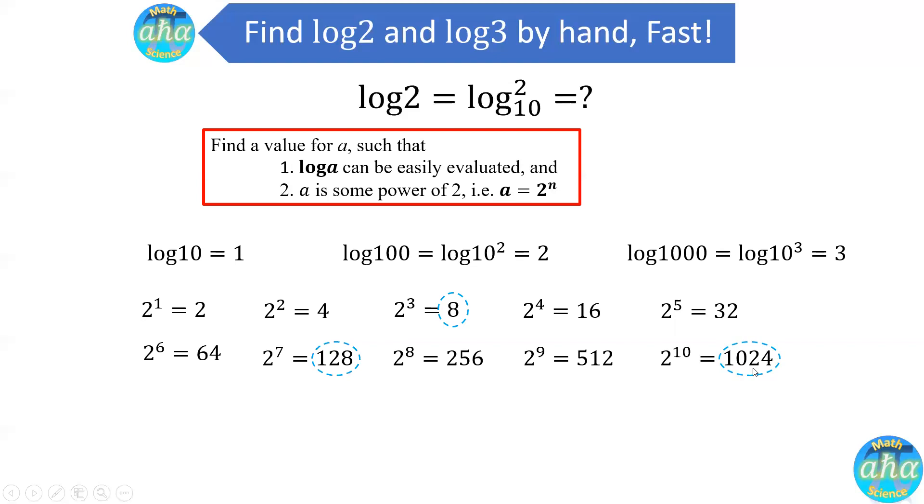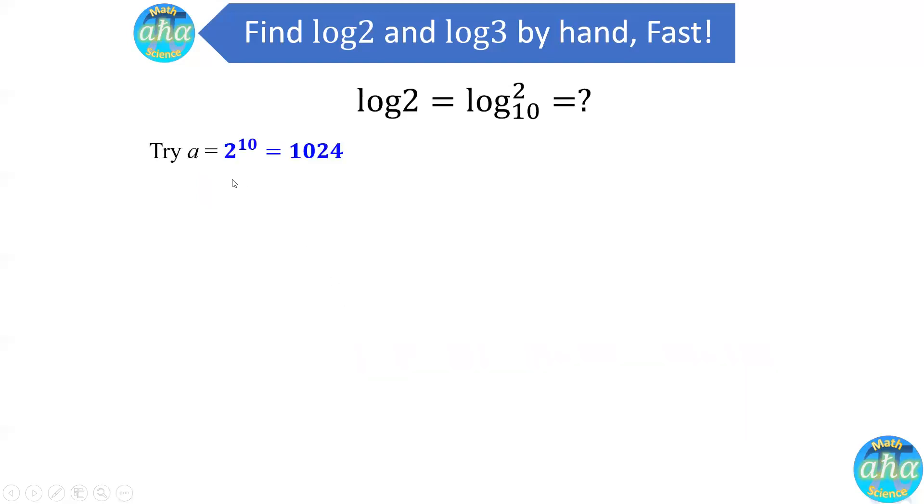So it seems like this number 1024 might be a good choice, and we can use this to try to evaluate log of 2. So we're going to try this value of a equal to 2 to the power of 10, or 1024. So when we try this number 1024, on one hand, log of 1024 is equal to log of 2 to the 10th power. And then we can bring this exponent 10 to the front and write this as 10 times log of 2. And the log of 2 is what we are after. On the other hand, log of 1024 can be approximated to be log of 1,000 because 1024 is very close to 1,000.